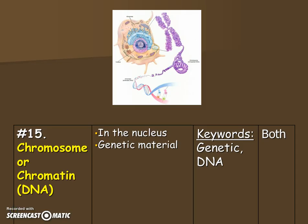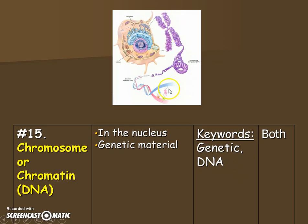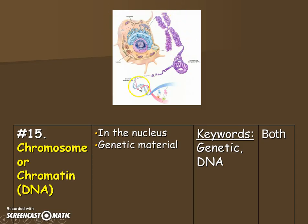Our second to last organelle is DNA, which comes in multiple forms called chromosomes or chromatin. Either form, we know DNA is our genetic material. For our eukaryotic cells, DNA is in the nucleus. Keywords are genetic and DNA. You can draw the DNA any way you want — maybe the little X shape or the double helix. We're not going to use an analogy for it, though you could say maybe the person inside the control room. We'll learn the difference between these two types of DNA later.